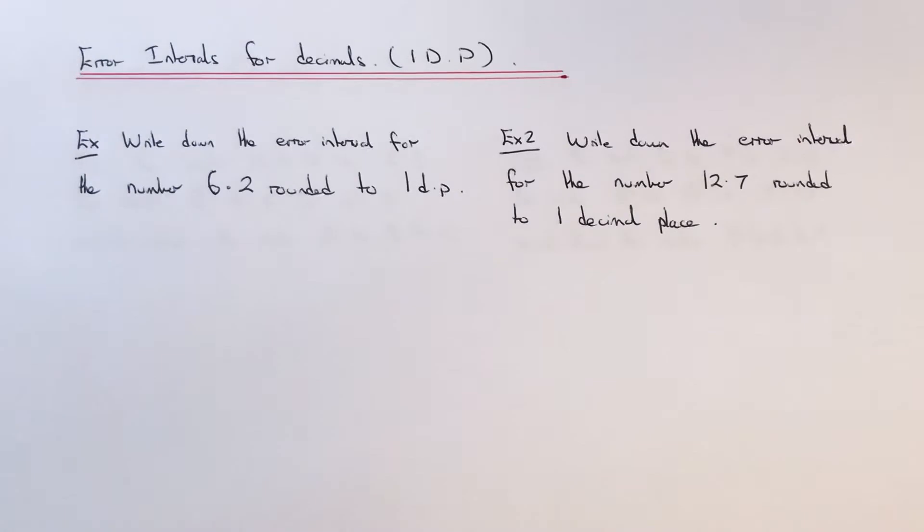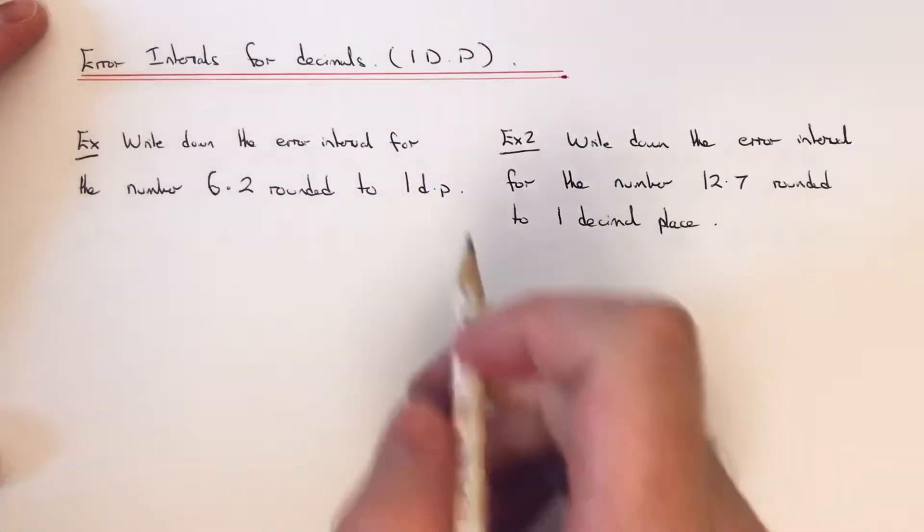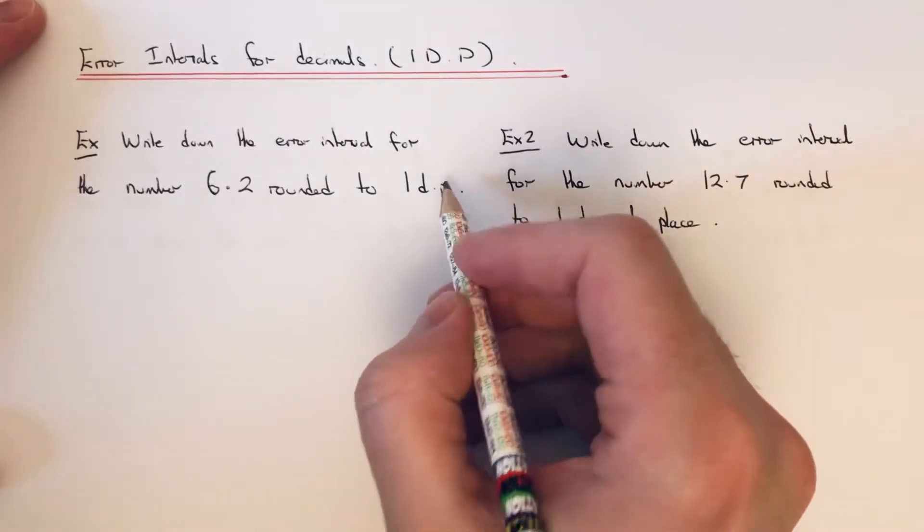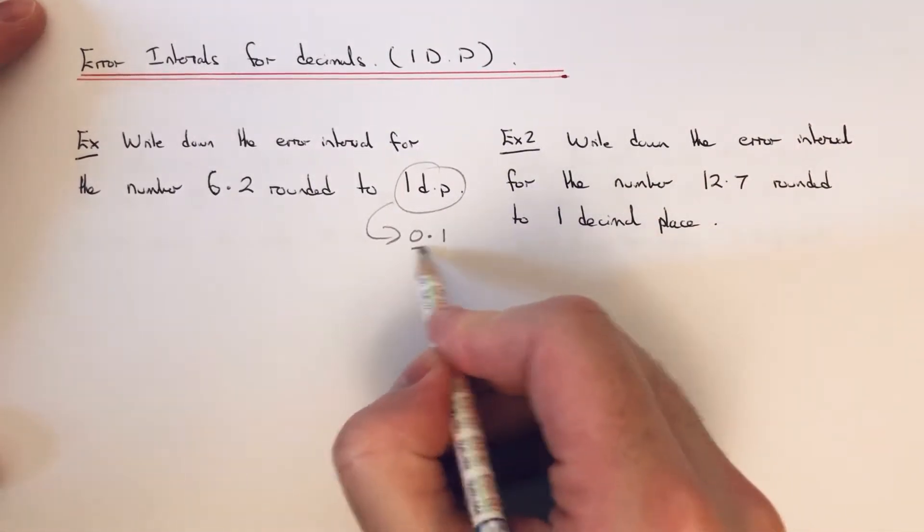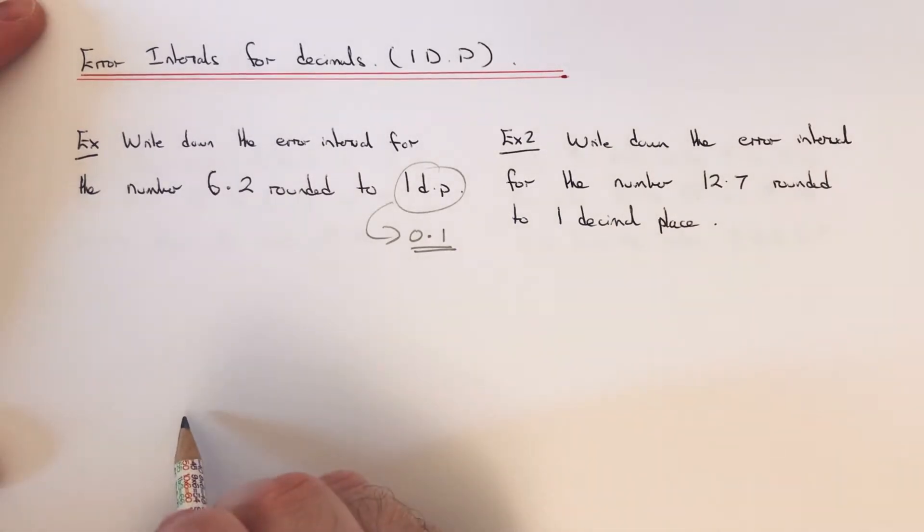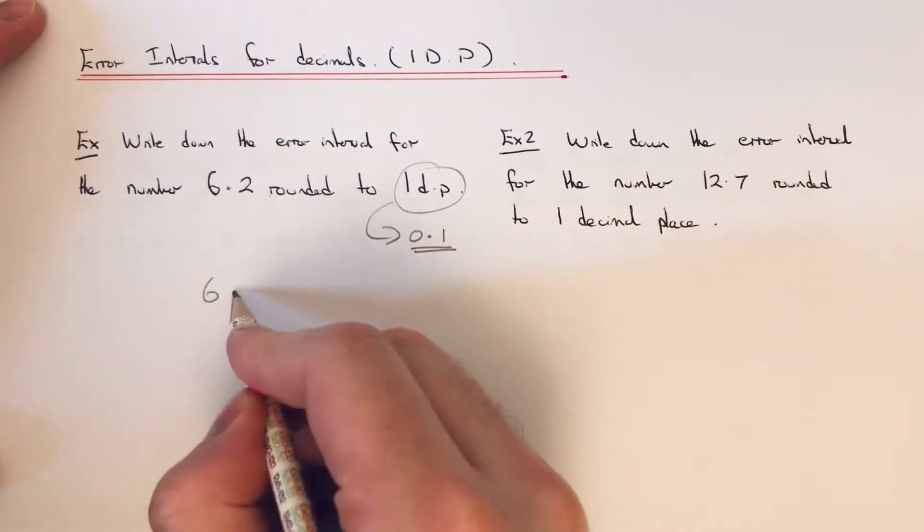Write down the error interval for the number 6.2 rounded to one decimal place. So since our number's being rounded off to one DP, this means our scale was increasing by 0.1 each time.